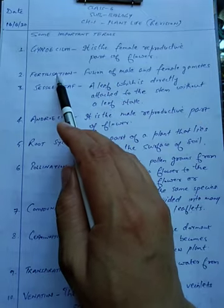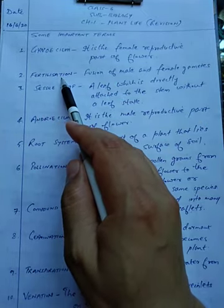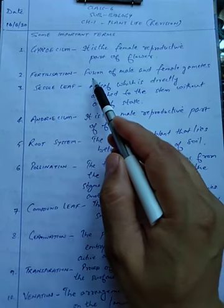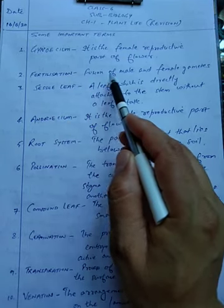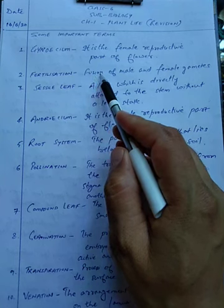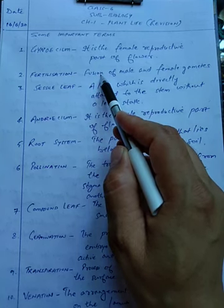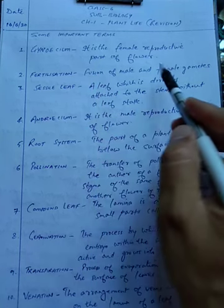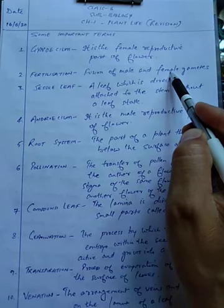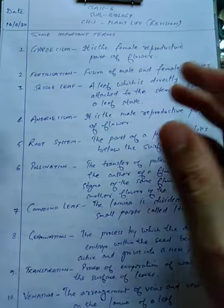The second term is fertilization. This is actually the fusion of male and female gametes. The male gametes fuse with the female gametes — fusion means they combine together.